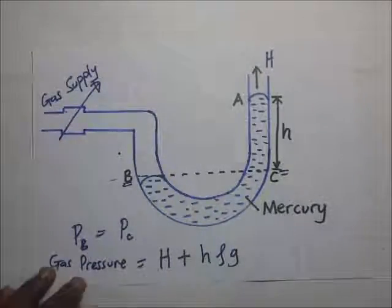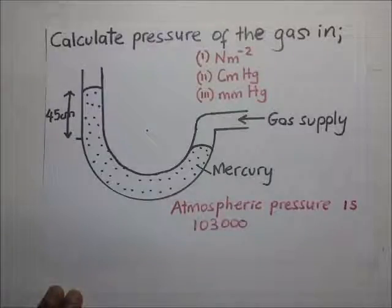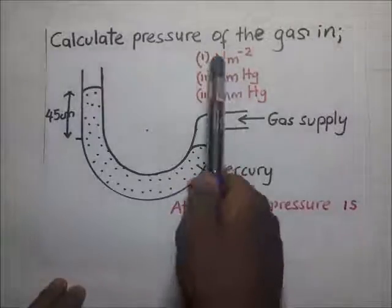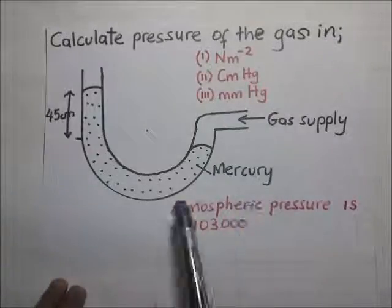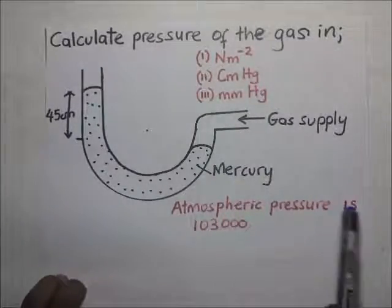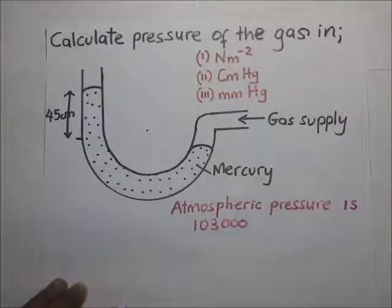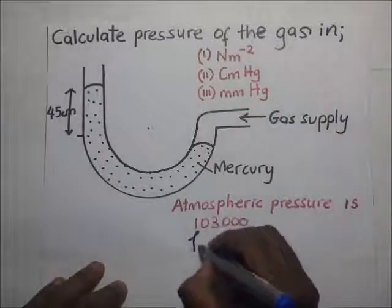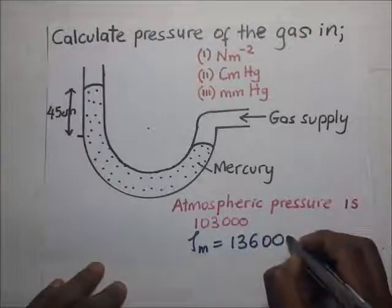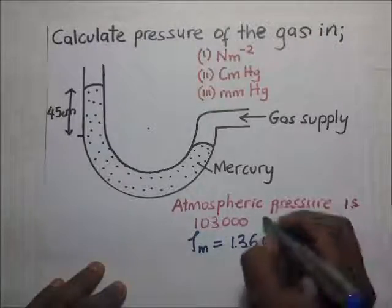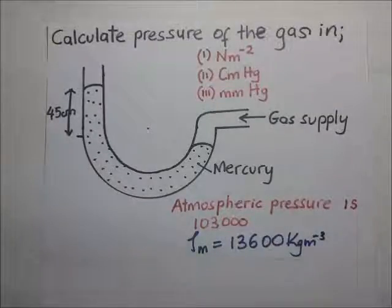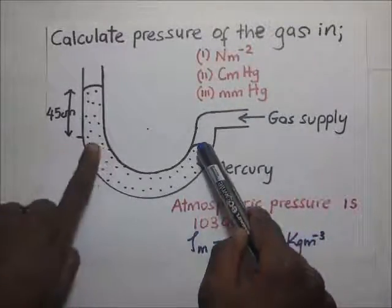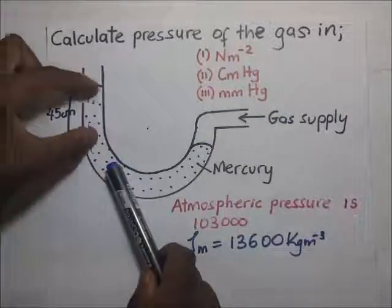We'll do worked examples to illustrate this. In this question, we are required to find the gas pressure in newtons per meter squared, in centimeters of mercury, and in millimeters of mercury. The atmospheric pressure given is 103,000 N/m² and the density of mercury is 13,600 kg/m³. When the gas supply comes in, it causes the mercury column to rise — and according to the diagram, the mercury column rises by 45 centimeters.